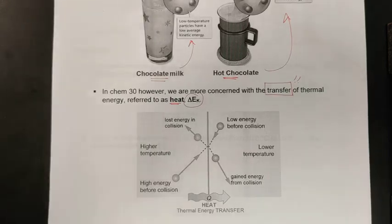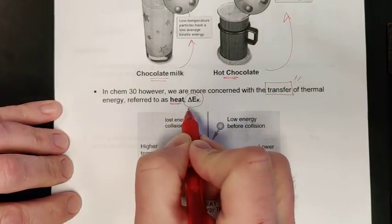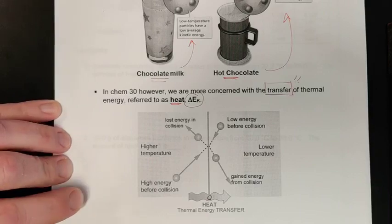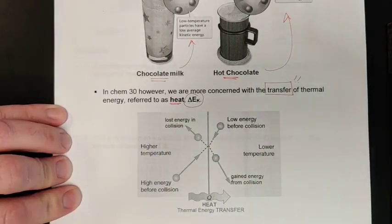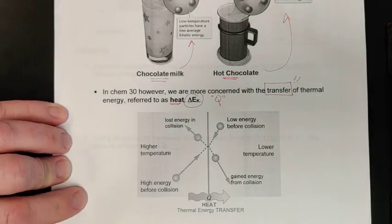We are very concerned with change. We have that little delta symbol here, which is the symbol for a change in a property. Heat is the change in kinetic energy, sometimes called Q, which we saw in the climate unit of science 10.